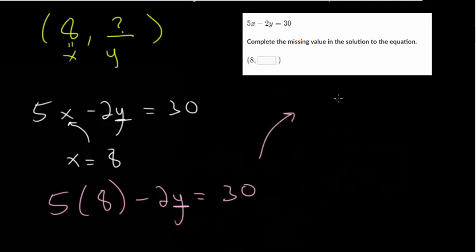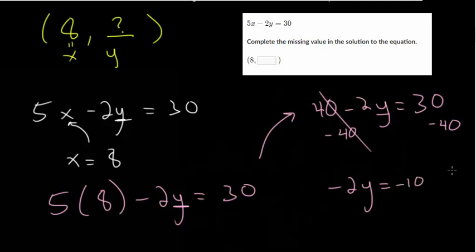So I'll simplify this because 5 times 8 is 40. Minus 2y equals 30. So we need to get y by itself. So let's subtract the 40 on each side so that it cancels out here. You get minus 2y. 30 minus 40 is negative 10. And then cancel out that minus 2 by using division. So minus 2 divided by minus 2. That's just 1. So you get y is negative divided by negative is positive. And 10 divided by 2 is 5. So y should equal 5. So that's our missing value.